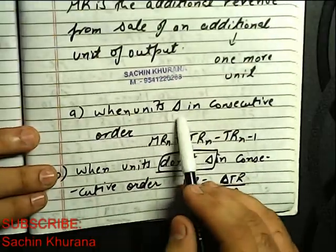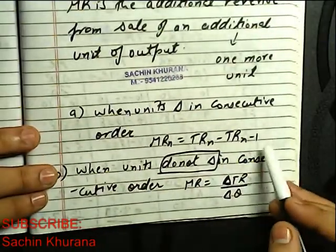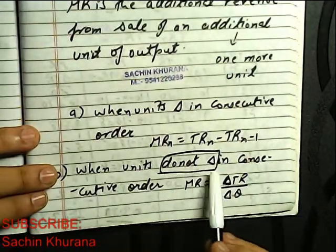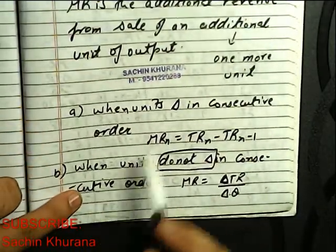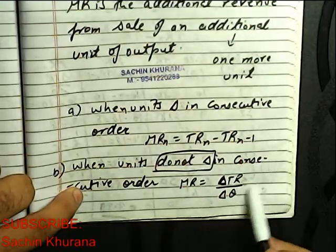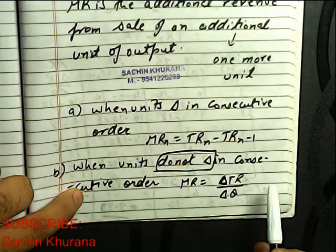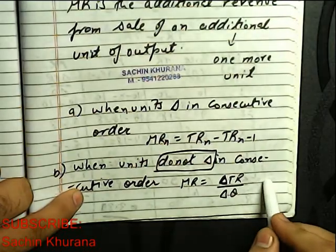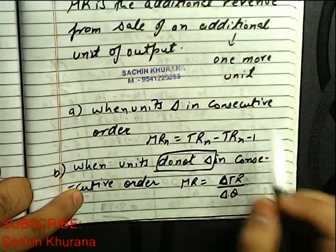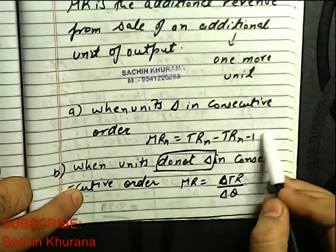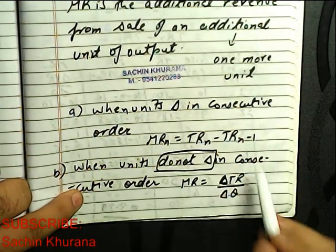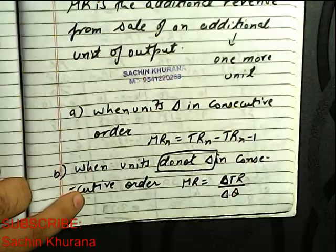So when units change in consecutive order we prefer using this formula. When units do not change in consecutive order, or although they change, then we use this formula. Right? So either they change in consecutive order or not, this formula can be used, but when they change in consecutive order we prefer doing this. But when they do not change, this is not applicable, we have to use this one.